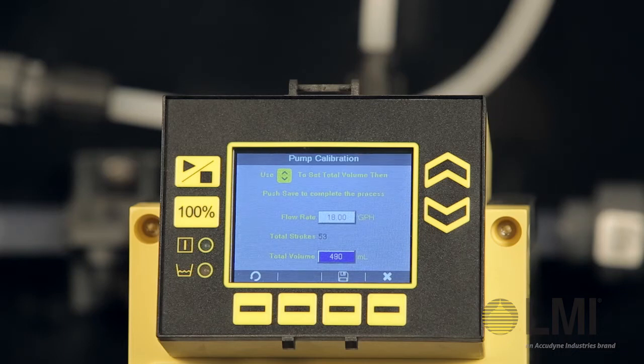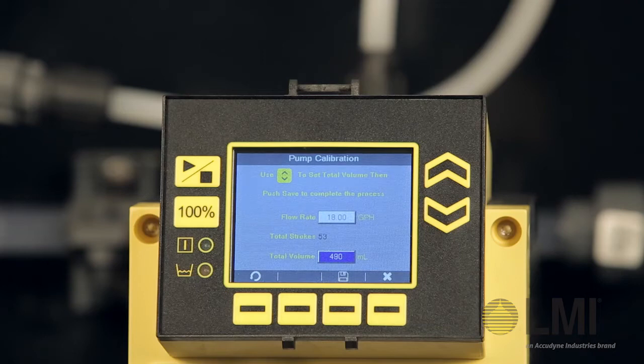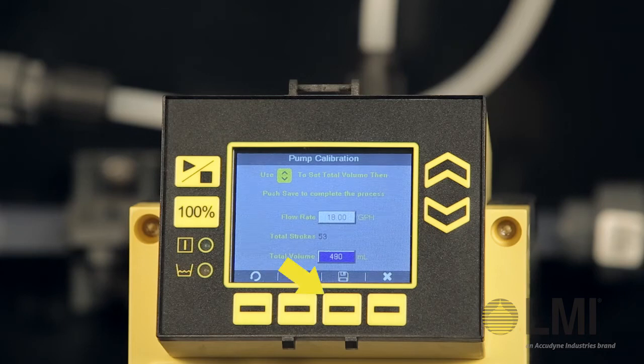To restart the calibration, press the context-sensitive menu button for the restart symbol in the lower left of your screen. To cancel the calibration, press the context-sensitive menu button for exit. To save the calibration, press the context-sensitive menu button for Save.